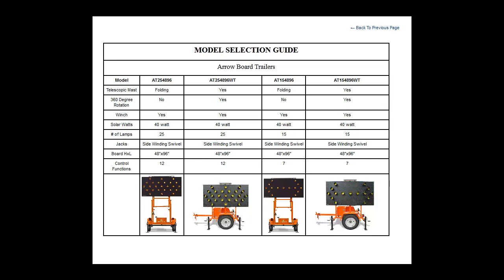All of our aero boards have the same size boards, but the difference is the telescopic mast. The aero board models that end in WT have a telescopic mast that allows them to raise up and lower. The other two models fold over for easy storage.